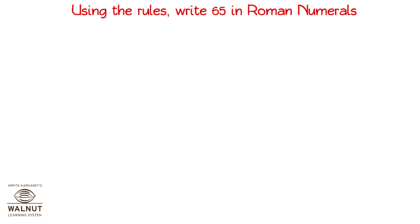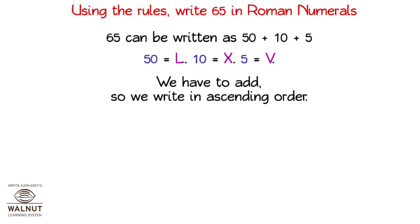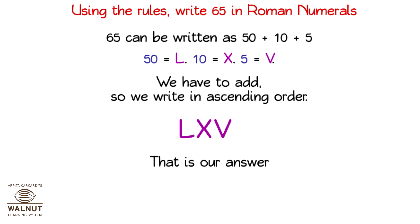Using the rules, write 65 in Roman numerals. 65 can be written as 50 plus 10 plus 5. 50 is L, 10 is X and 5 is V. We have to add, so we write in ascending order: L, X, V. That is our answer.